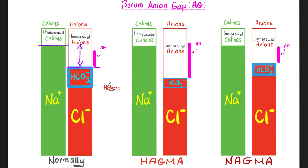But in HAGMA, something else was going on. A certain disease or intoxication is adding unmeasured anions into the body. So the unmeasured anions are increasing — these anions are negative. As you gain negatives, you should lose negatives. You will lose bicarbonate. For example, in lactic acidosis, lactic acid is an unmeasured anion. Keep adding lactic acid — that's a negative. In response, you get rid of a negative: bicarbonate. So the anion gap increased — that's why we call it HAGMA. High anion gap metabolic acidosis. What happened to chloride? No change. It didn't have to change. That's why HAGMA is called a normochloremic metabolic acidosis.